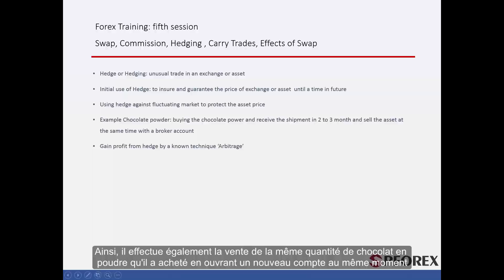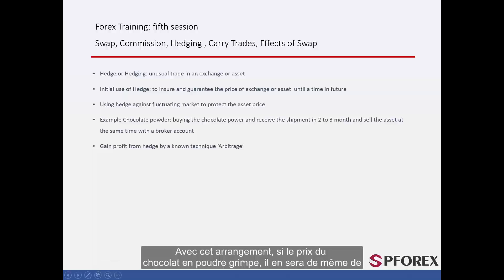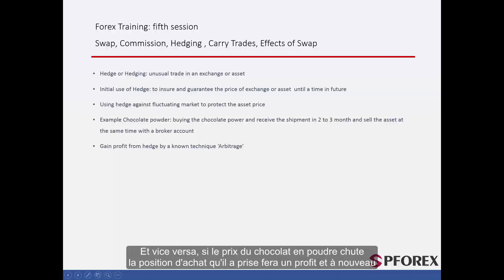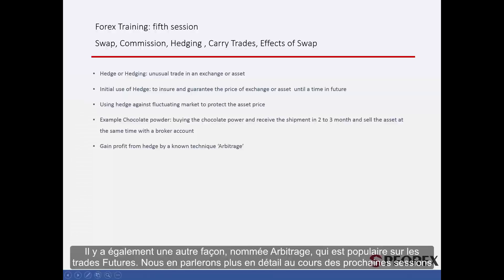Therefore, he also intends to sell the same amount of the chocolate powder he bought by opening a new account at the same time. With this arrangement, if the price rises, his buy position gains while his sell position faces losses with the same amount — he breaks even — and vice versa. In this way, all businessmen can ensure their assets within the market. There is also another way, called arbitrage, which is popular in future trades. We will talk more about this in further sessions.